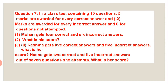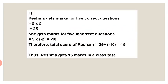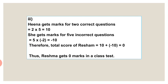Then the seventh sum: in a class test containing 10 questions, 5 marks are awarded for every correct answer and minus 2 marks for every incorrect answer, and zero for questions not attempted. Mohan gets 4 correct and 6 incorrect answers — what is his score? Reshma gets 5 correct and 5 incorrect — what is her score? Hina gets 2 correct and 5 incorrect out of 7 questions she attended — what is her score? Correct answer represents 5 marks, wrong answer represents minus 2, and unattempted represents zero. Mohan's mark: 4 correct and 6 incorrect gives the solution. Reshma: 5 correct and 5 incorrect gives a score of 15 marks. And Hina: 2 correct and 5 incorrect gives the answer as zero.